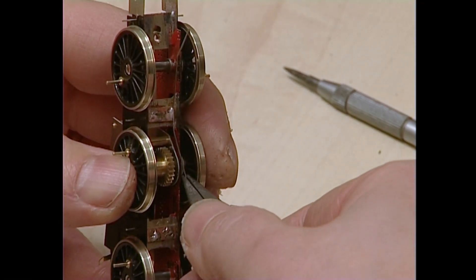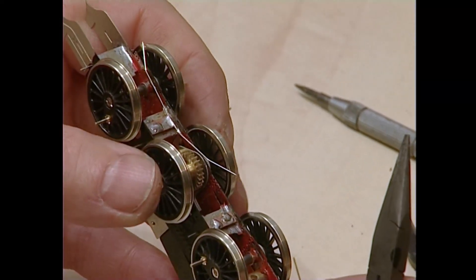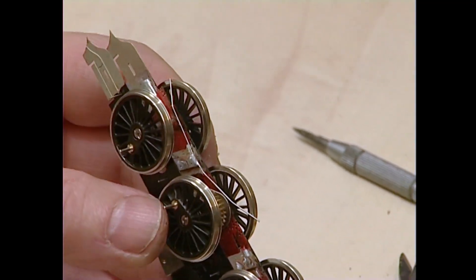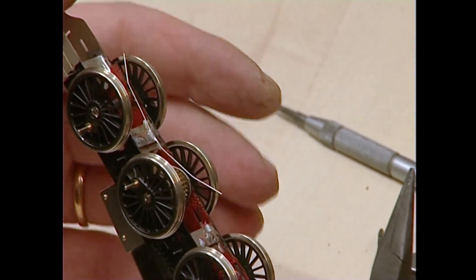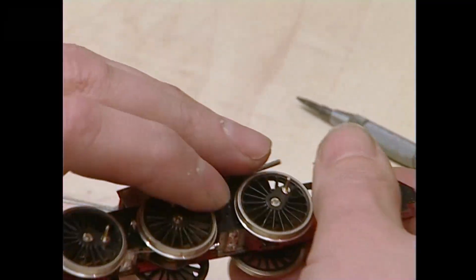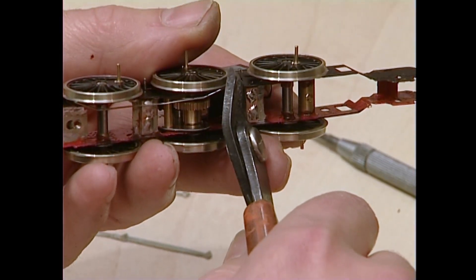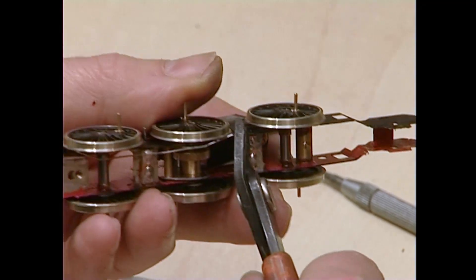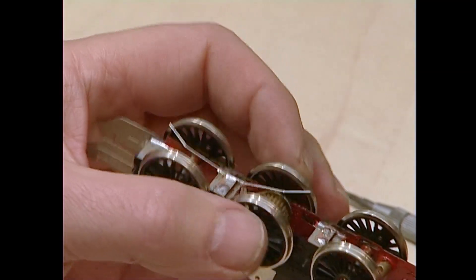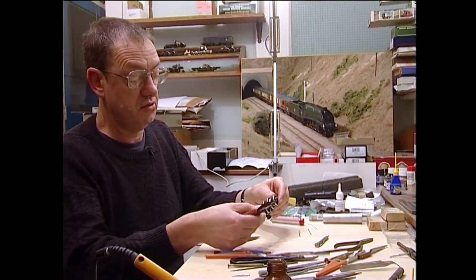What I do then is add a second bend so that it doesn't prevent the wheel from turning, but it's giving me a nice positive pickup. When you're happy with that, snip off so that it just protrudes beyond the edge of the wheel.